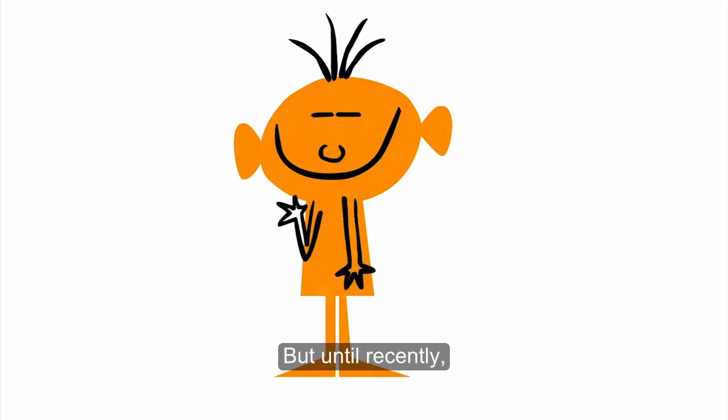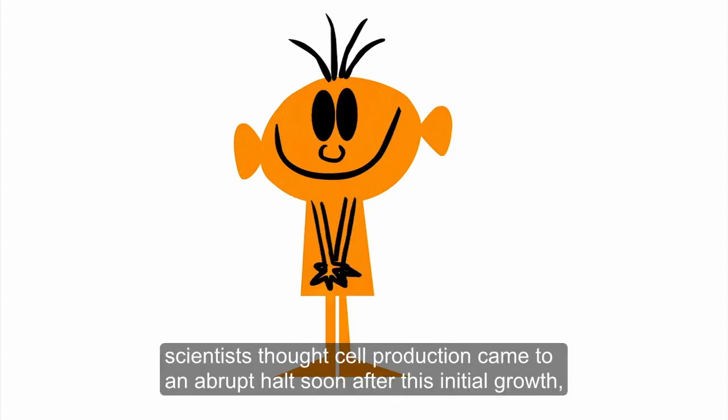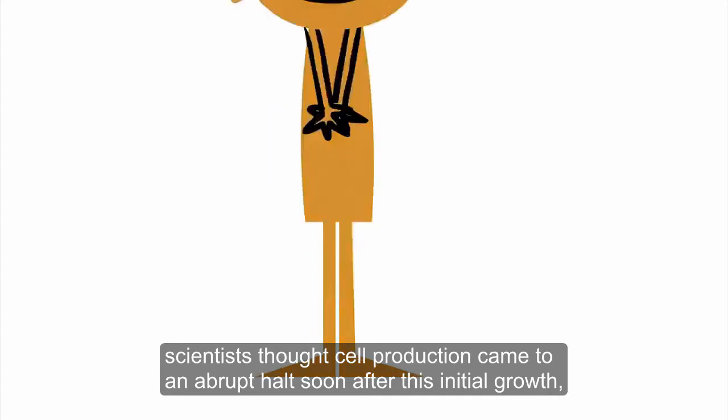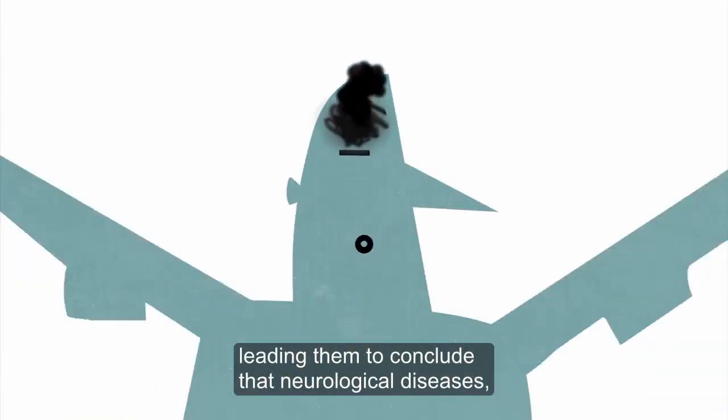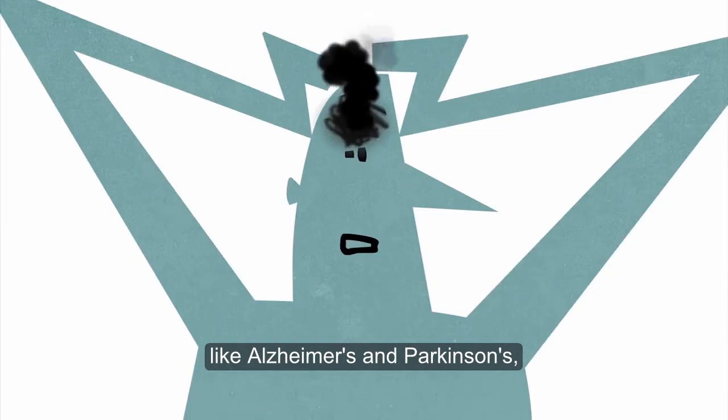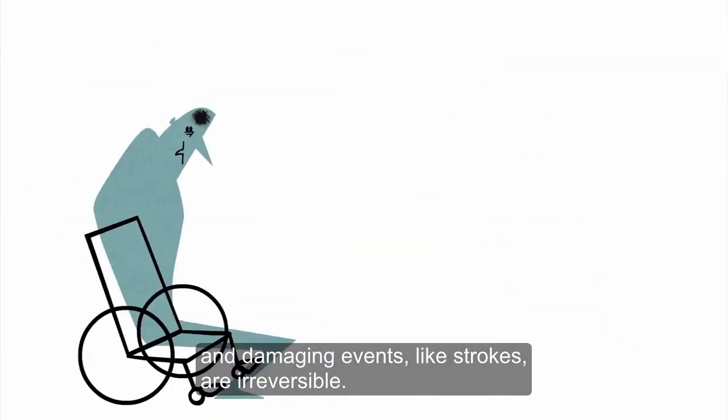But until recently, scientists thought cell production came to an abrupt halt soon after this initial growth, leading them to conclude that neurological diseases like Alzheimer's and Parkinson's and damaging events like strokes are irreversible.